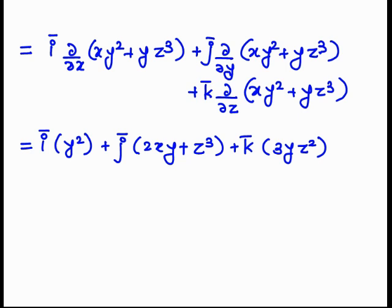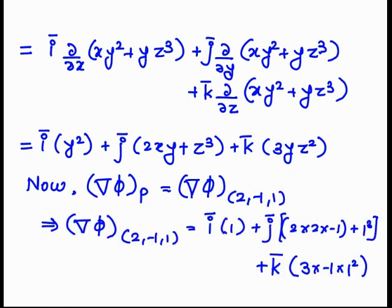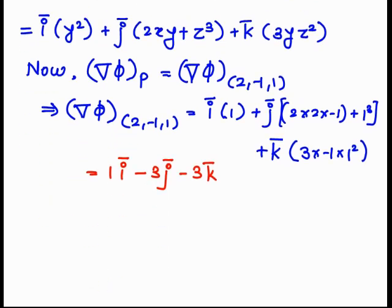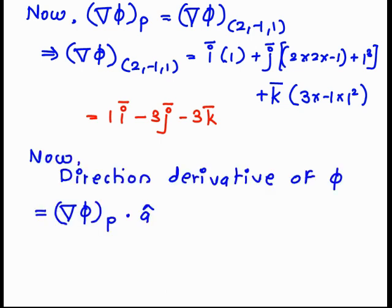Now we find del phi at point P = (2, -1, 1). We substitute x = 2, y = -1, z = 1 into del phi. By substituting these values, we get del phi at P = 1i - 3j - 3k.